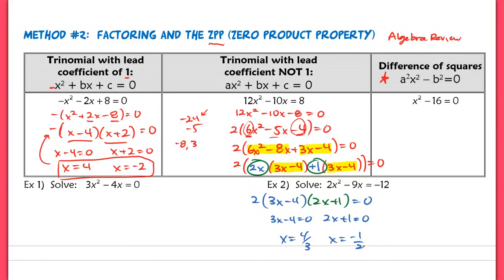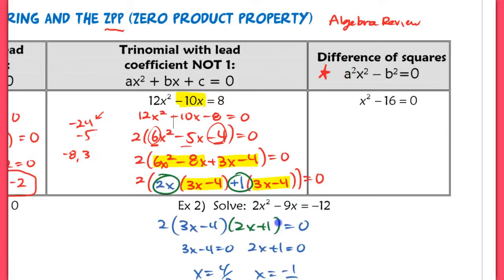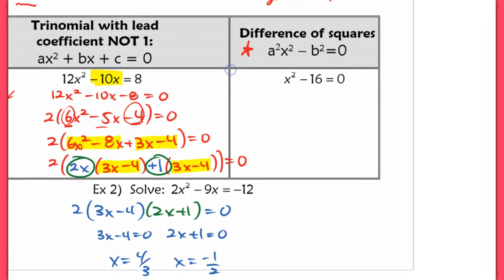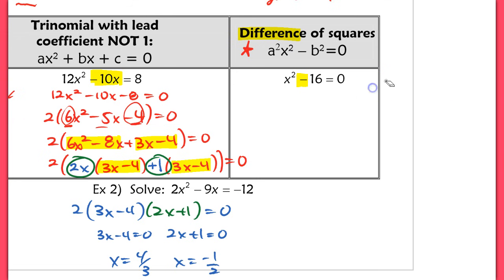In all of these cases, method 1 does not work because a linear term appears, so you can't use the square root method for either of those problems. You could use the square root method for this next one, but I want you to learn how to factor it as well because you'll get slightly more difficult questions where it's not so easy to use the square root method. This next one is called the difference of squares — difference because you are subtracting.